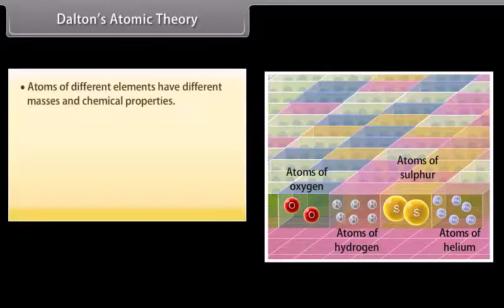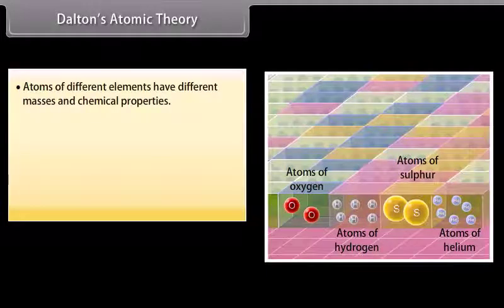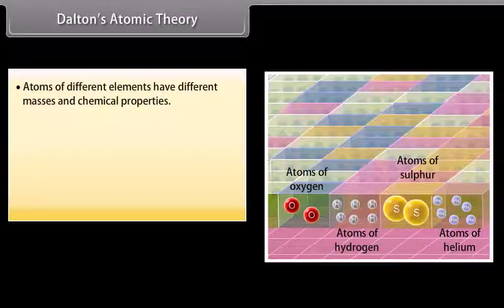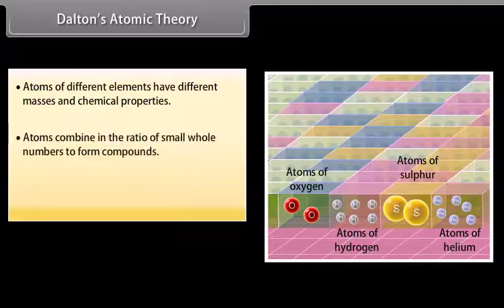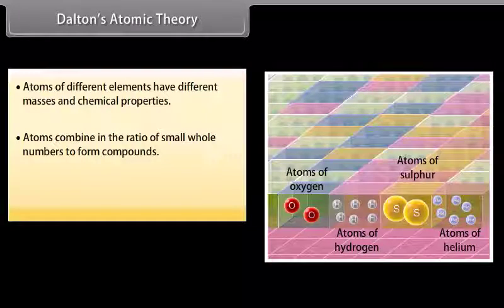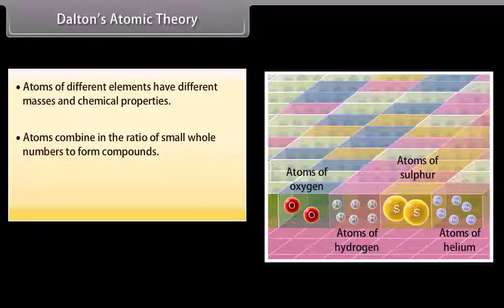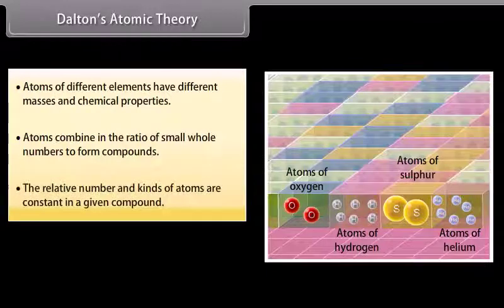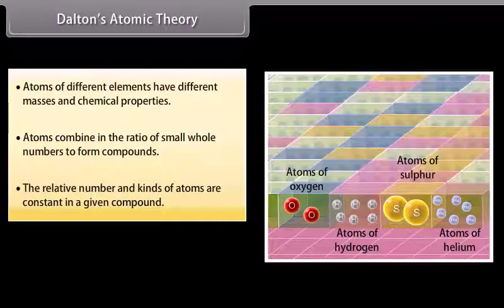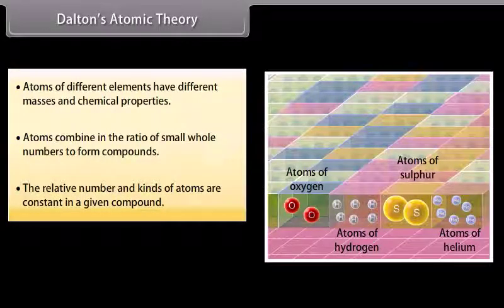4. Atoms of different elements have different masses and chemical properties. 5. Atoms combine in the ratio of small whole numbers to form compounds. 6. The relative number and kinds of atoms are constant in a given compound.